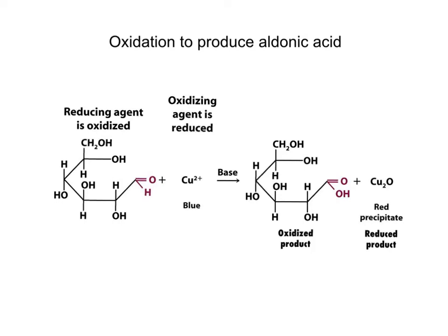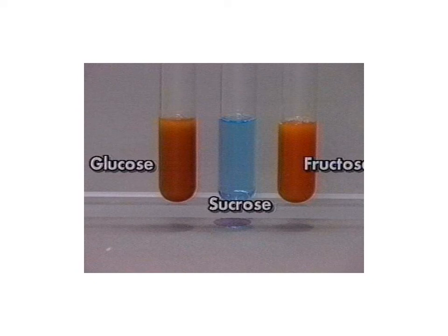The oxidation of an aldose by Benedict's reagent is used in a clinical test for monosaccharides in urine. Carbohydrates that react with mild oxidizing reagents are classified as reducing sugars. Glucose and fructose are reducing sugars because they will reduce copper in the Benedict's reagent in basic solution to form the brick-red precipitate.